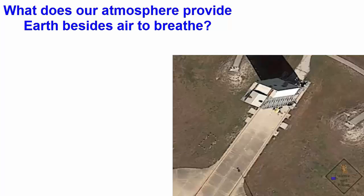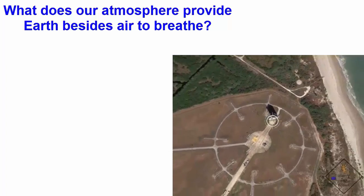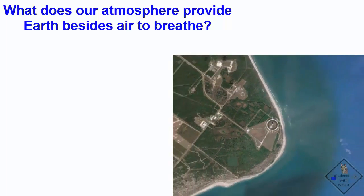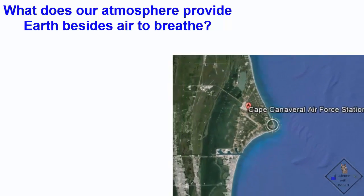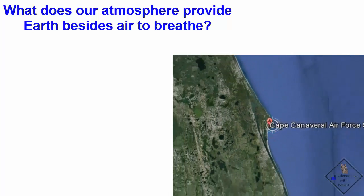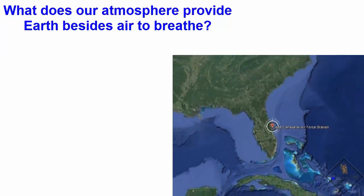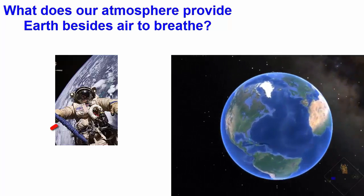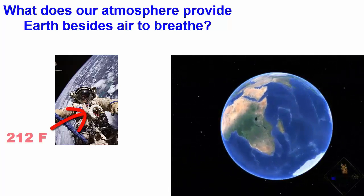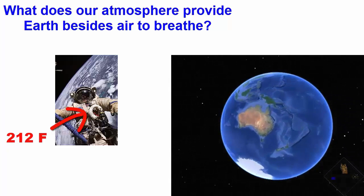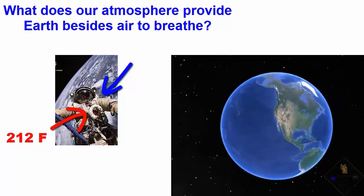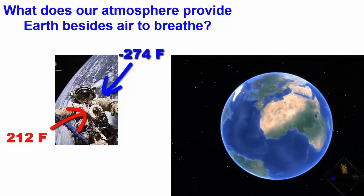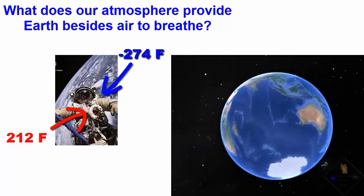Before we can talk about the Greenhouse Effect, we need to first start with just what our atmosphere does for us here on Earth. If we could get in a rocket and get above Earth's atmosphere and go for a spacewalk, the side of our suit facing the sun would be the boiling temperature of water, 212 degrees Fahrenheit, and the side facing away from the sun is 274 degrees Fahrenheit below zero, or negative 274 degrees.